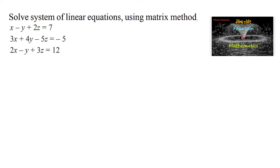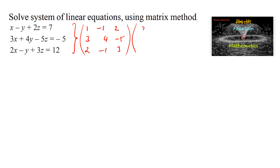Solve a system of linear equations using the matrix method. The equations are: x minus y plus 2z equals 7, 3x plus 4y minus 5z equals negative 5, and 2x minus y plus 3z equals 12. We can write this in matrix form by taking the coefficients — 1, negative 1, 2; 3, 4, negative 5; 2, negative 1, 3 — into variables xyz and constants 7, negative 5, and 12.